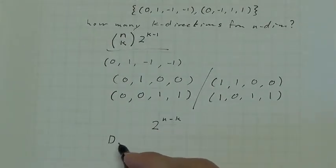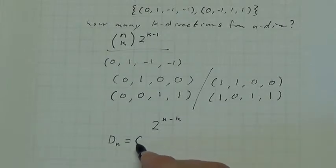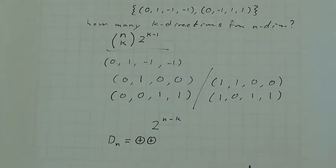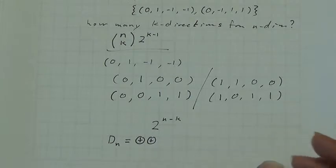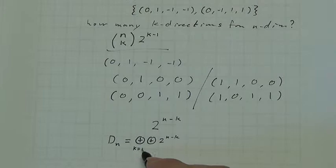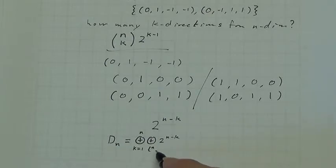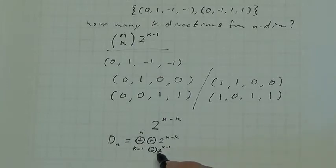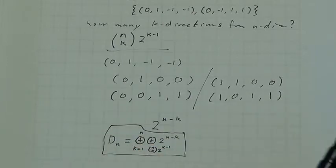That means the directed edge set for any dimension n is equal to — using a circle-sum notation to represent appending a number to a set — the number we append is 2 to the n−k, and we do this as k goes from 1 to n. We know there are n choose k times 2 to the k−1 k-directions for each k, and 2 to the n−k edges for each k-direction. So this is how we get the directed edge set.